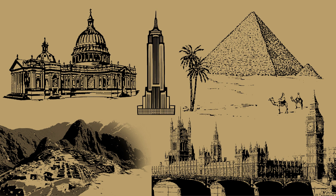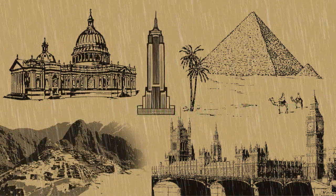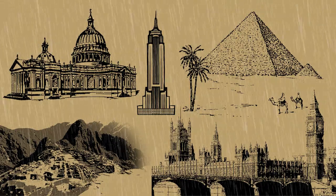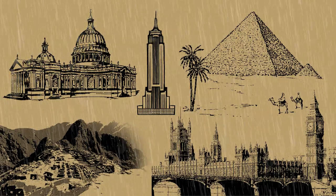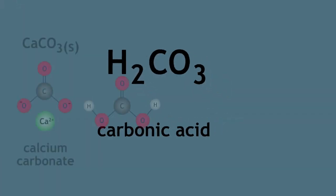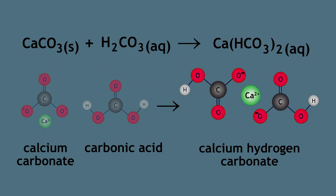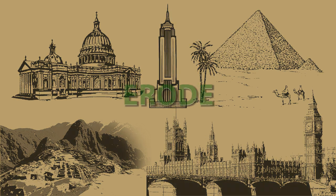There is, however, a fairly recent major environmental issue. Acid rain is slowly eroding these and many other limestone structures. One of the acidic components of acid rain is carbonic acid. Calcium carbonate reacts with carbonic acid to give calcium hydrogen carbonate, which is soluble in water. As a result, these limestone structures erode.